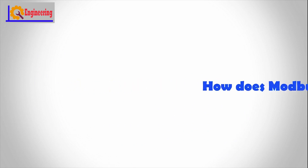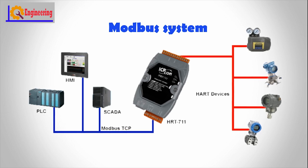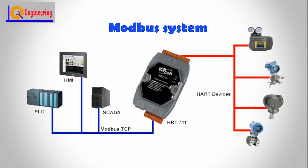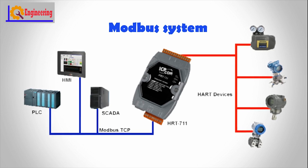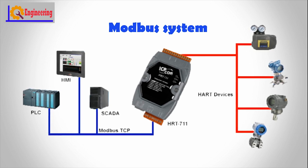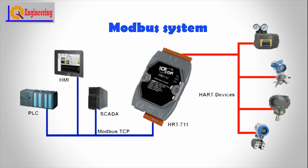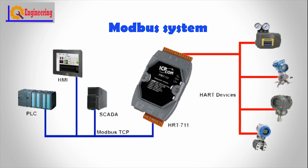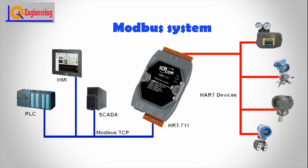How does Modbus work? Modbus is transmitted over serial lines between devices. The simplest setup would be a single serial cable connecting the serial ports on two devices — a master and a slave. The data is sent as a series of ones and zeros called bits. Each bit is sent as a voltage: zeros are sent as positive voltages and ones as negative. The bits are sent very quickly; a typical transmission speed is 9600 baud (bits per second).